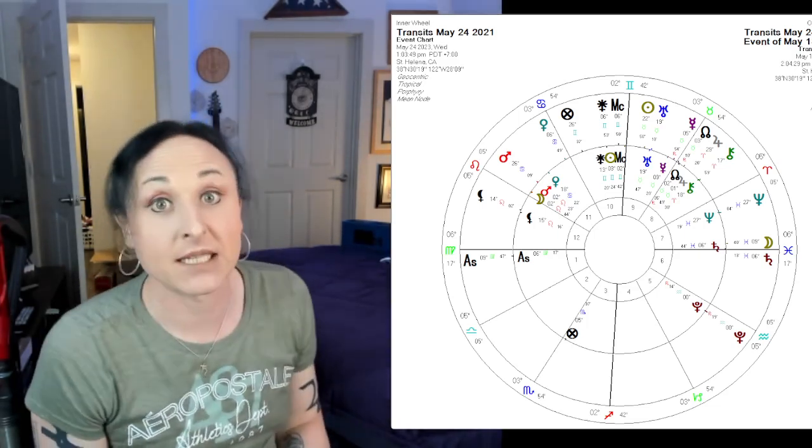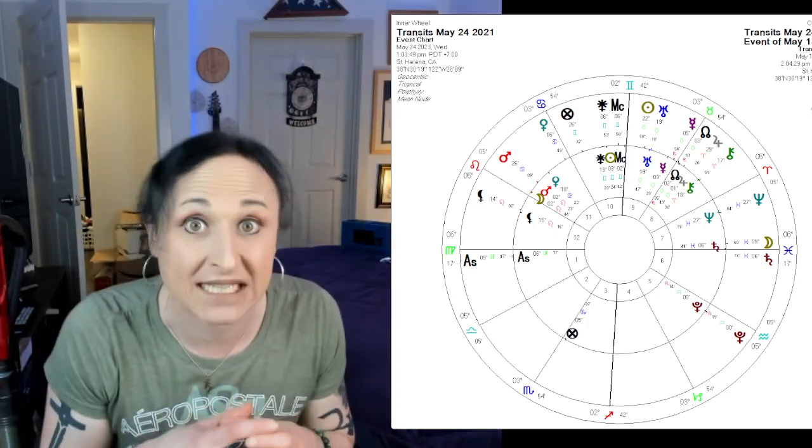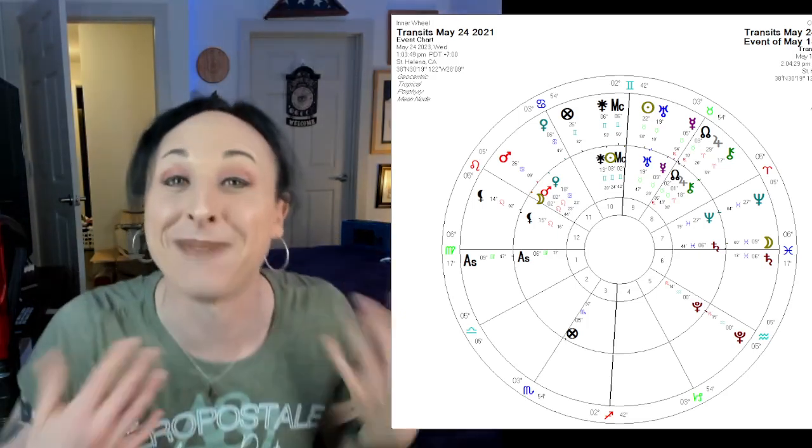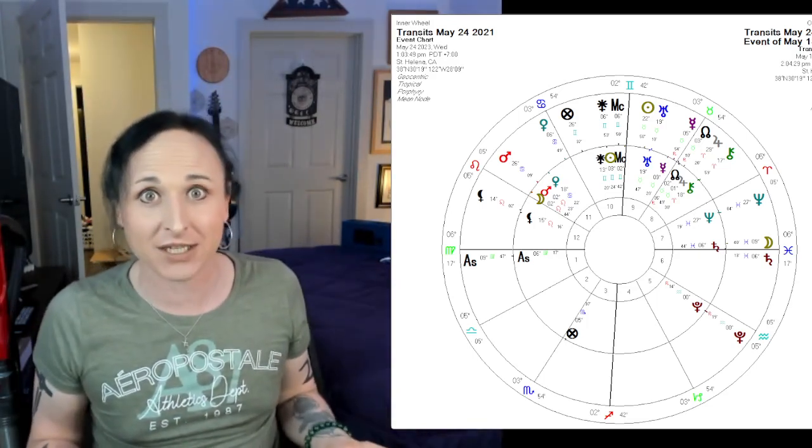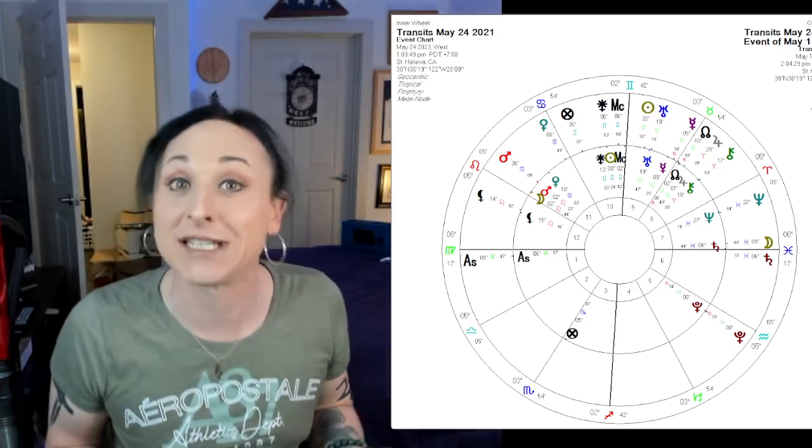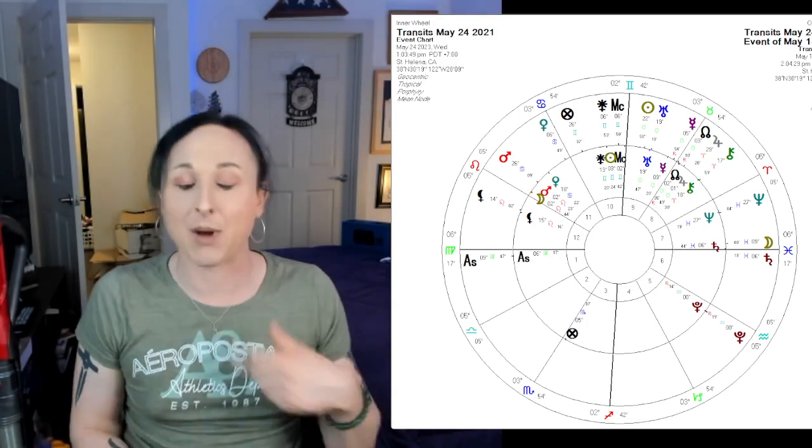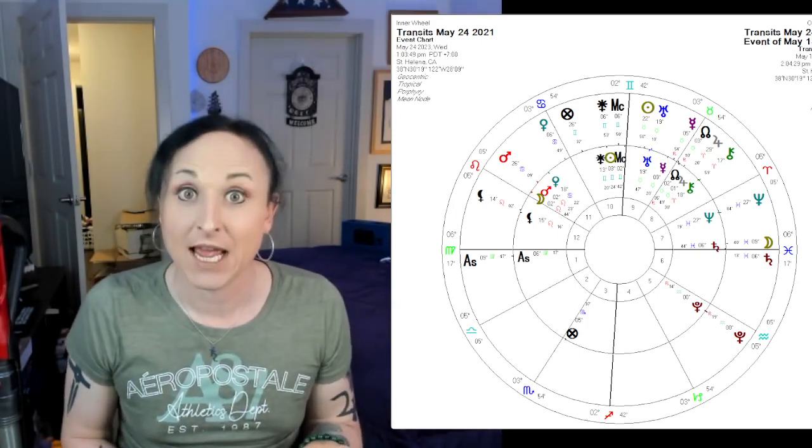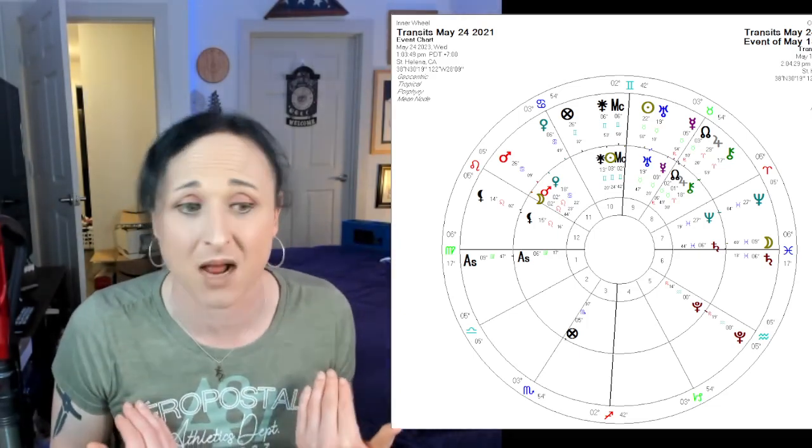Saturn aspects in synastry isn't necessarily a bad thing. It binds things together. It makes things last longer. So it can add up to longevity in a relationship. It's good to see good Saturn aspects in long-term relationships. But it can also be frustrating if the relationship isn't serving you and you really want to leave. It's hard to break that up.